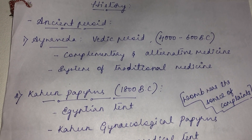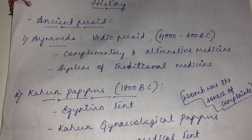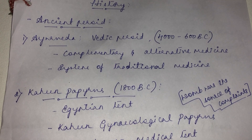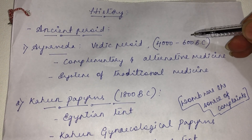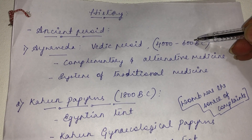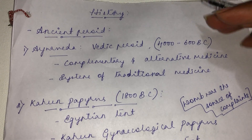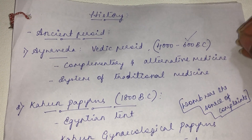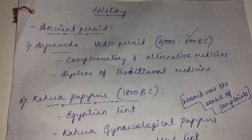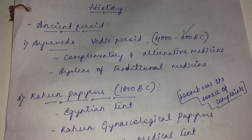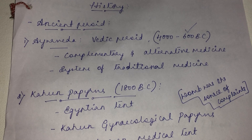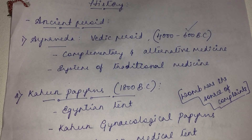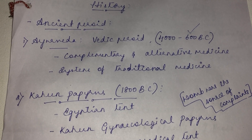During the ancient period, the first work on pharmacology as a traditional system of medicine was Ayurveda, practiced during the Vedic period from 4200 to 600 BC. It was a complementary and alternative medicine, a system of traditional medicine. Even today Ayurveda is followed and for certain ailments it has cures — it is still practiced and is one of the oldest traditional medical methods.